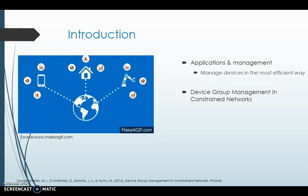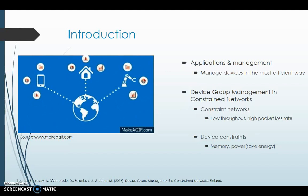IoT devices are interconnected in constrained networks, which are networks with low throughput and high packet loss rate. These devices have constraints such as memory and power, so it's important to manage them in such a way that these constraints are minimized.